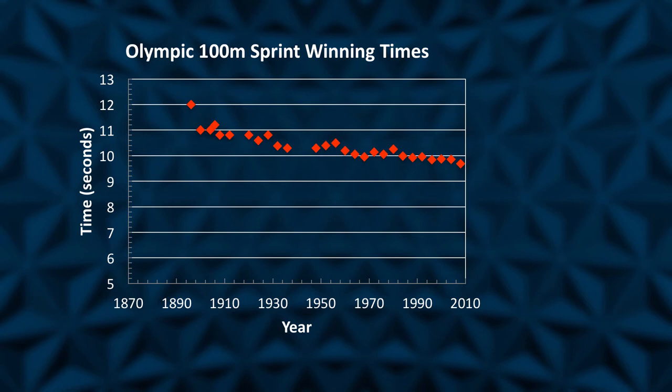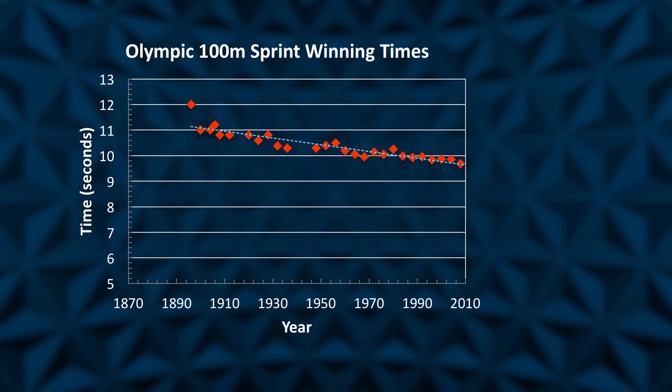The data points show a trend downwards. A line of best fit can be added directly through the distribution of points. If we wish to extrapolate this line, we can use the model to make a prediction.